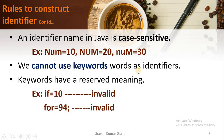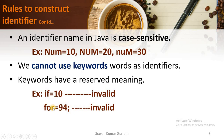We cannot use keywords as an identifier. A keyword is a word which has a reserved meaning; we will discuss keyword topics later on. As of now, just remember the keywords we have in Java — we should not use those as identifiers. If we do, you will get an error. For example, 'if = 10': here 'if' is used as a variable name, but it is invalid because 'if' is a keyword. Similarly, 'for = 94' is also invalid because 'for' is a keyword.